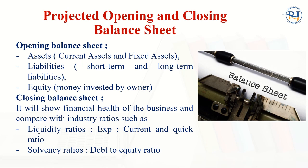The balance sheet will show the financial health of the business and allow comparison with industry ratios. Important ratios include the liquidity ratio — covering the current ratio and the quick ratio — and solvency ratios, which relate to how the business will sustain over a long period of time, including the debt-to-equity ratio. These are some of the important ratios, and I have discussed more ratios in another video.